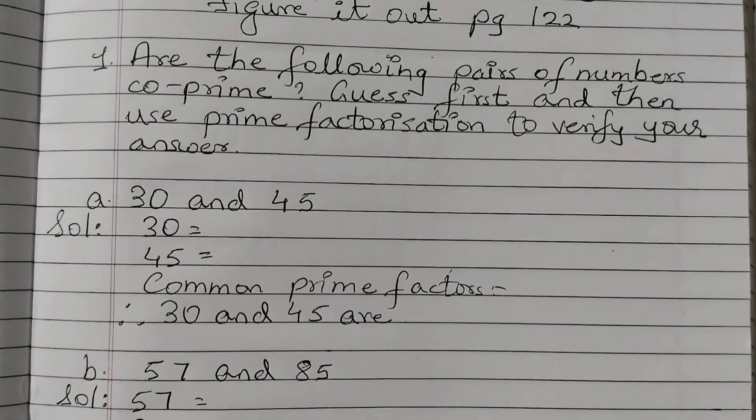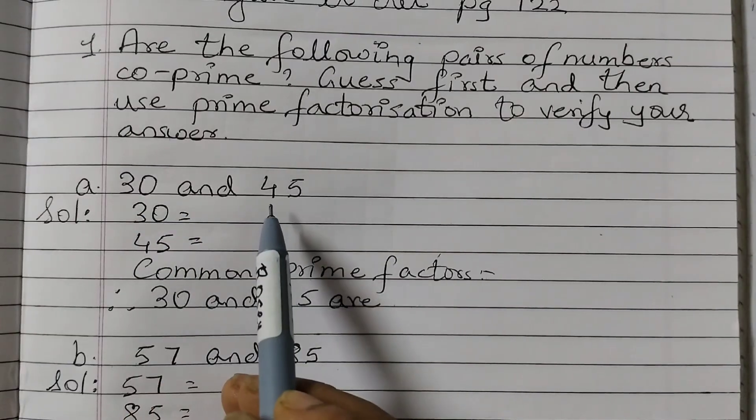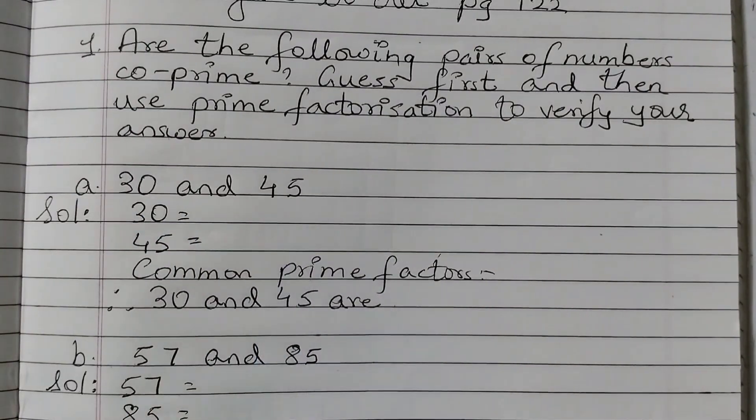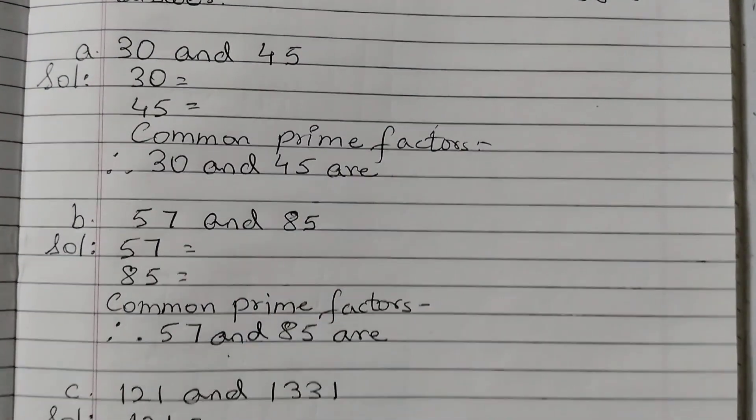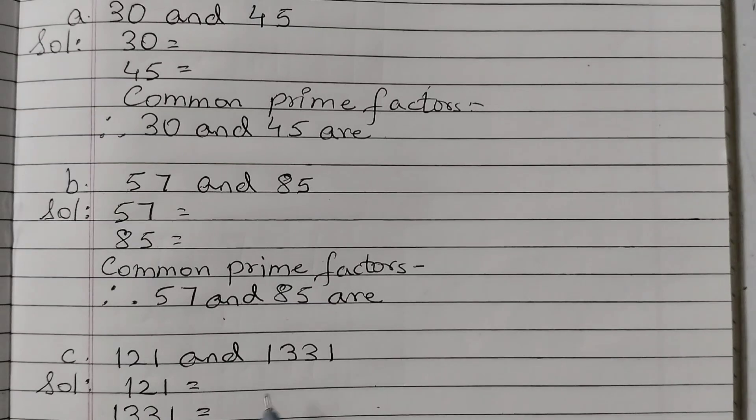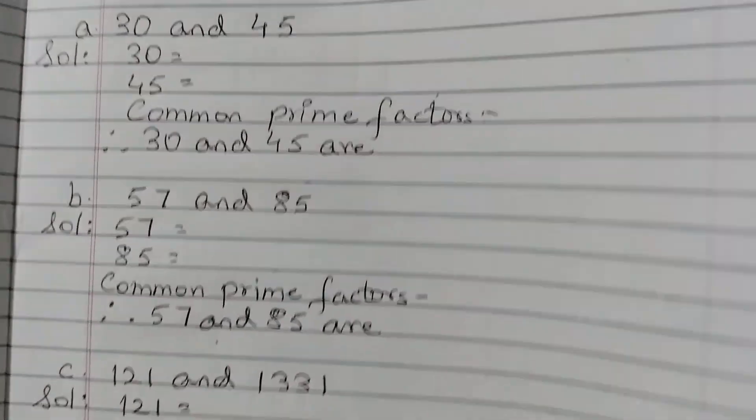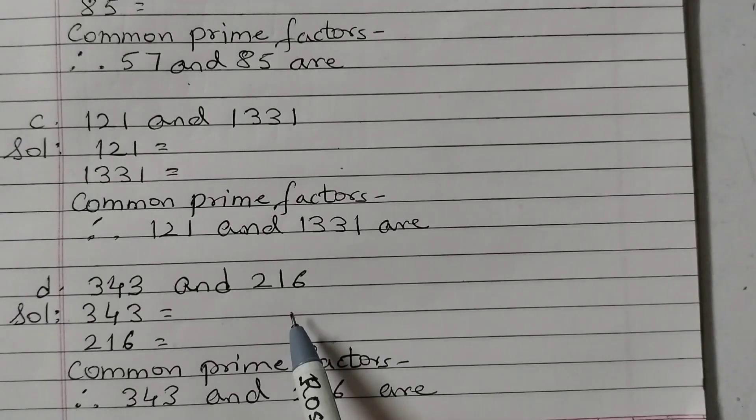So the first pair is 30 and 45. Looking at this number we can make out that these two are in the table of 5, so they are not co-prime. Next, 57 and 85, this looks like co-prime. 121 and 1331, this could also be not a co-prime because both are in the table of 11. And then the last pair that we have is 343 and 216. These could be co-prime.